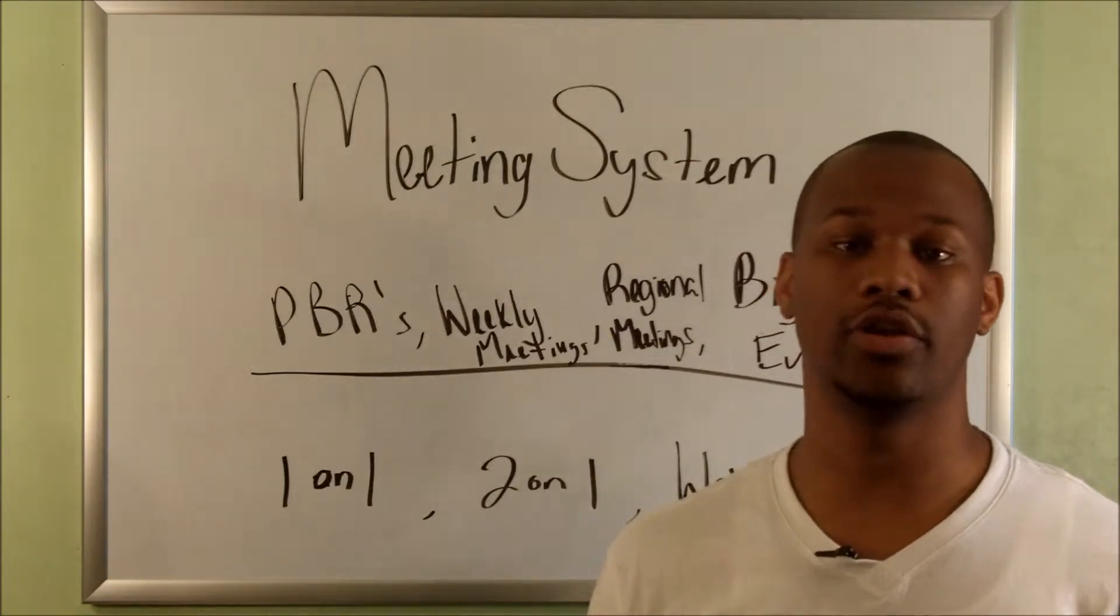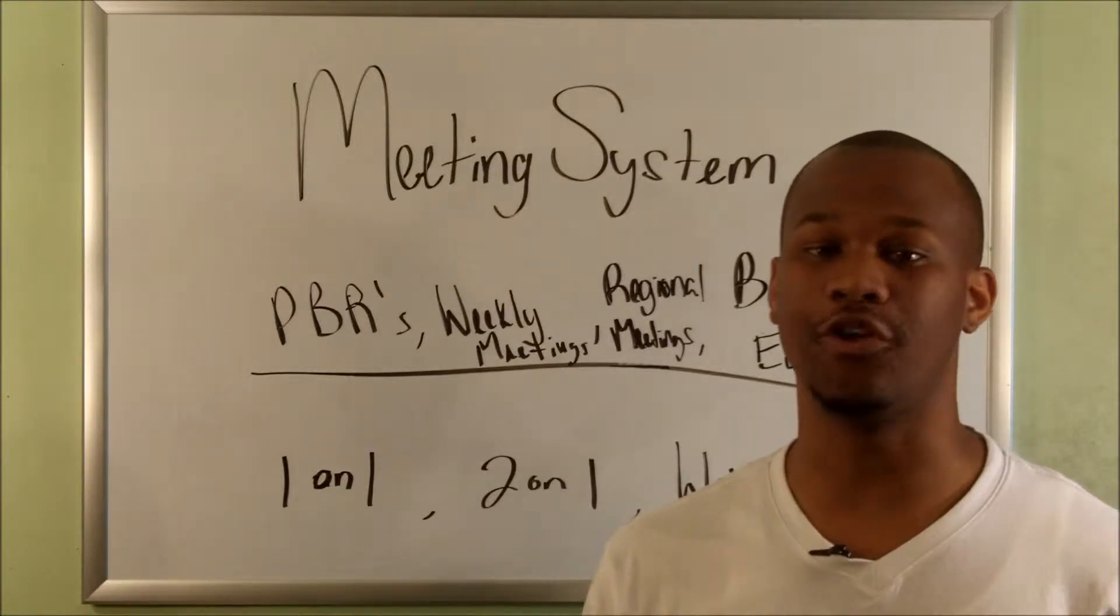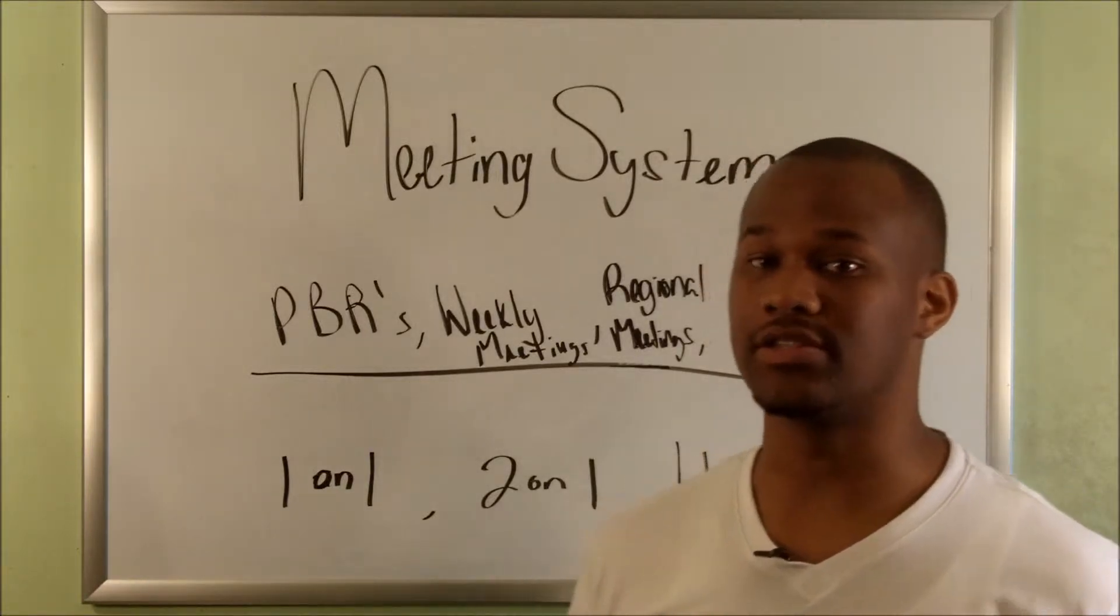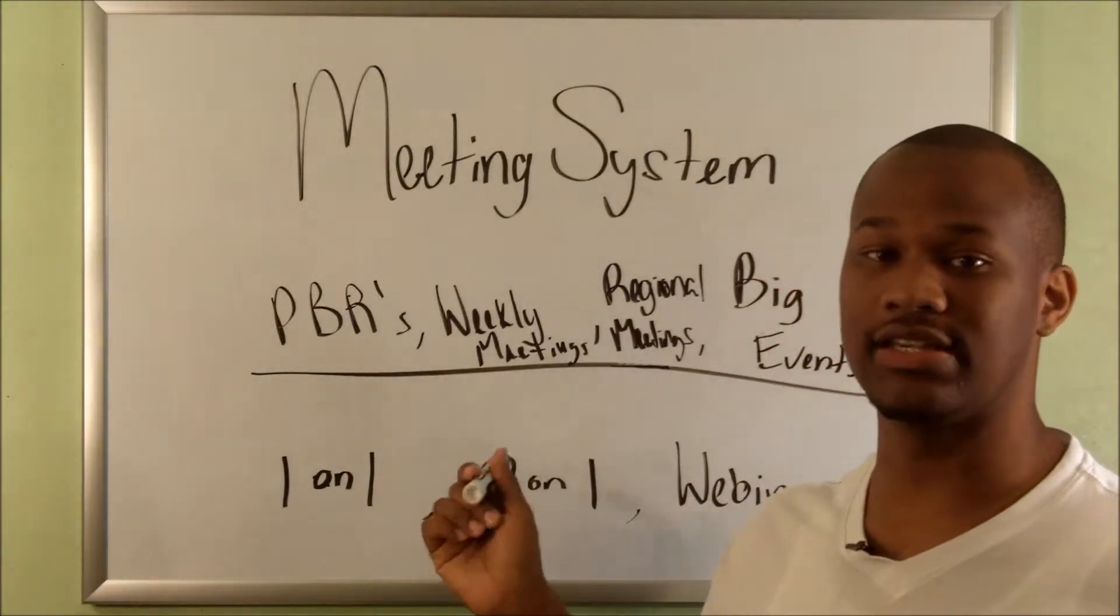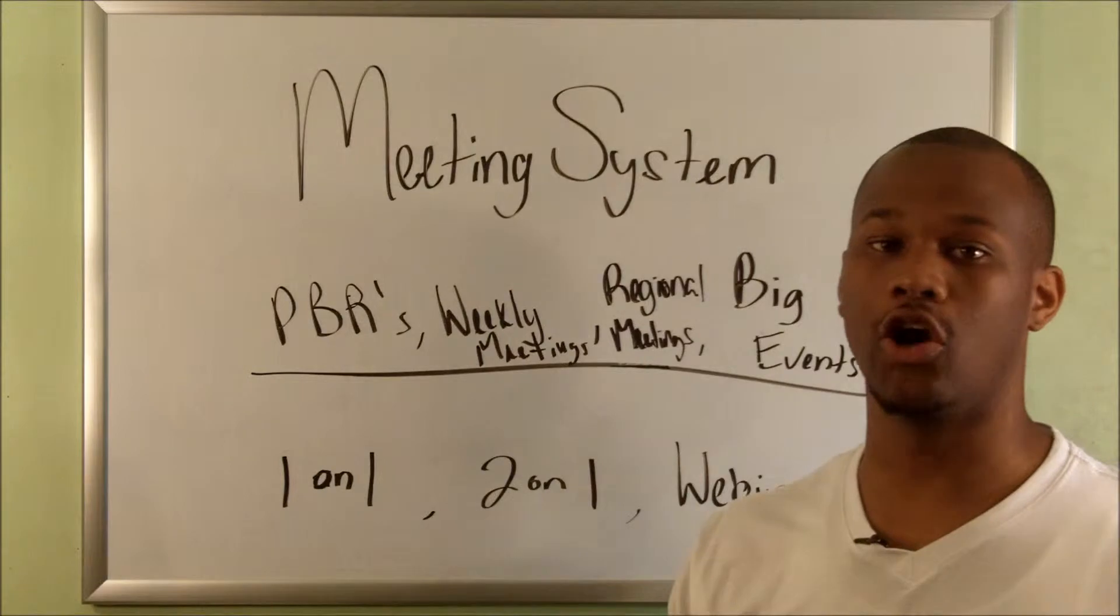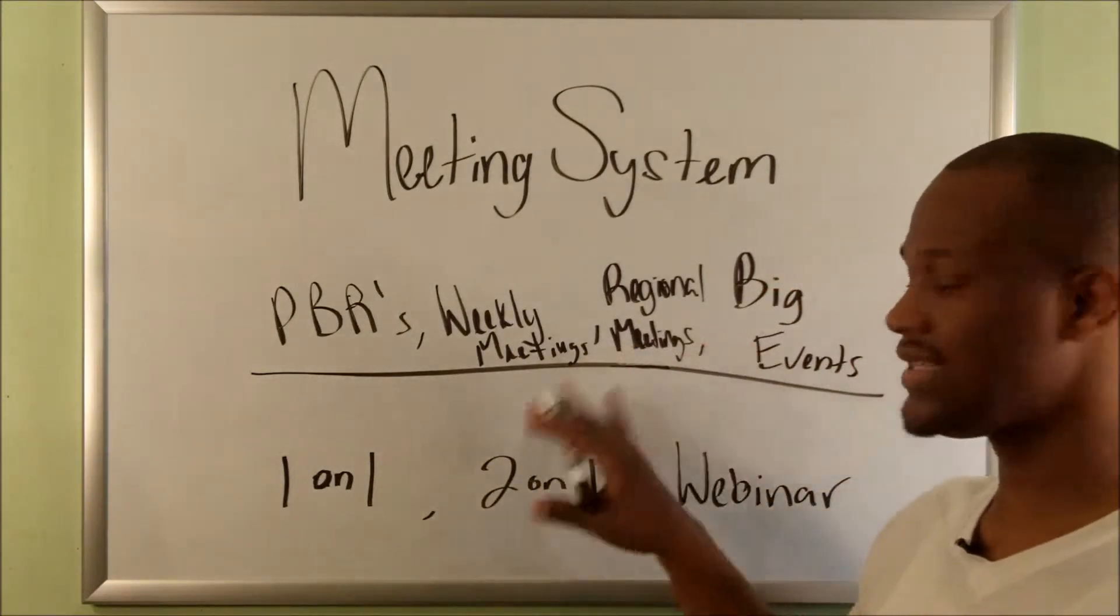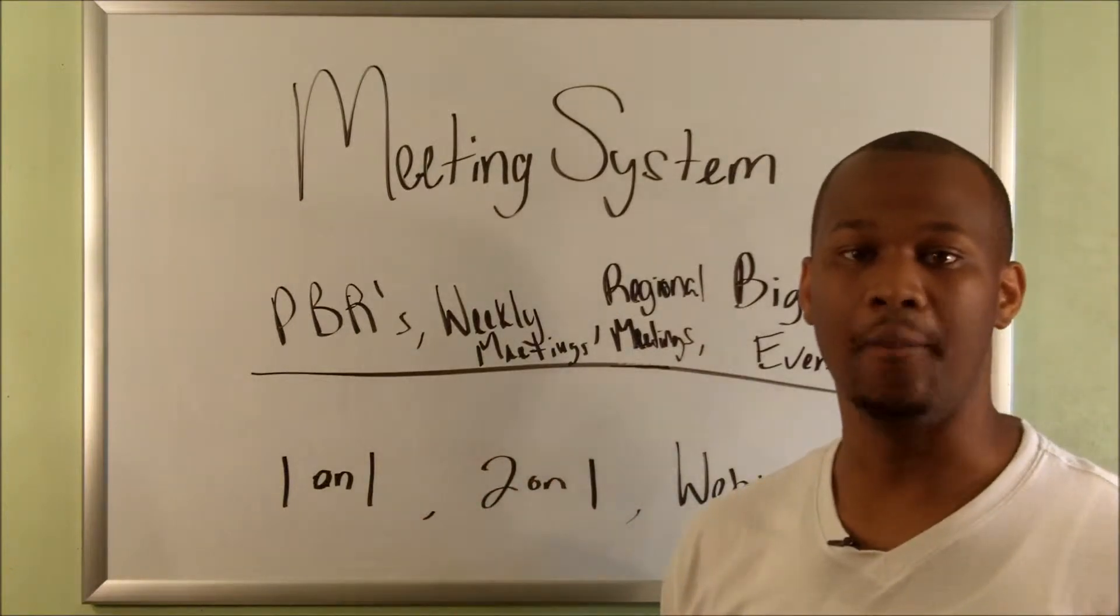What I mean by production system is this is where you're going to make your money. This is where sales are going to happen, and this has to have a major focus inside your business. Let me tell you what's inside the meeting system first, and then I'll tell you what your goal should be.